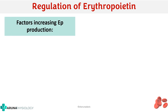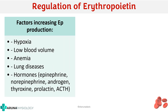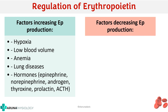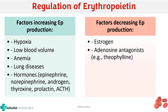Factors increasing erythropoietin production include hypoxia, low blood volume, anemia, lung diseases and hormones. In the first four causes, the common pathology is hypoxia itself — that is why hypoxia is the most potent stimulus for erythropoietin production. Factors that decrease erythropoietin production include the estrogen hormone, and adenosine antagonists like theophylline, which also decrease erythropoietin production.